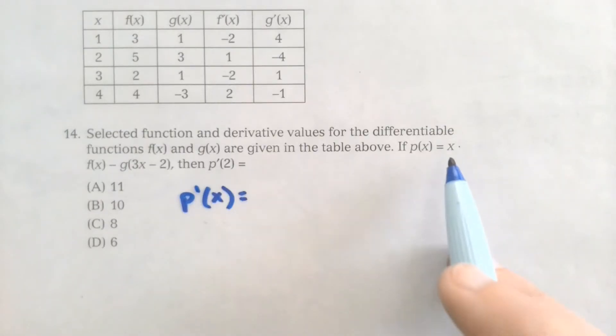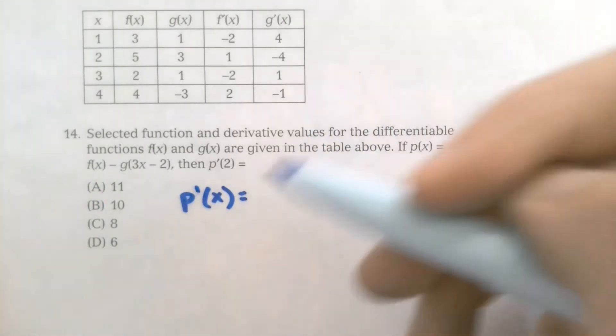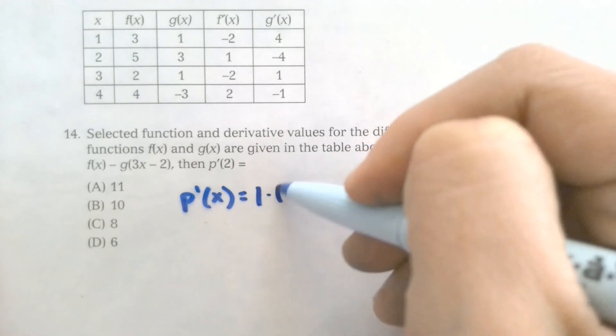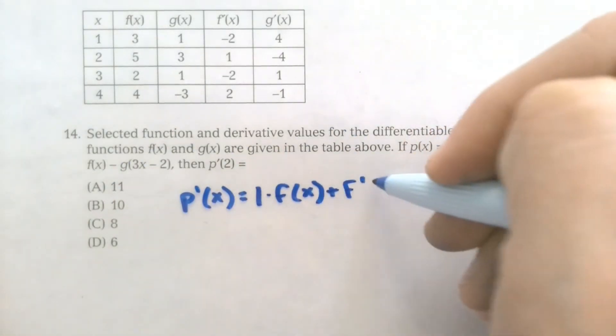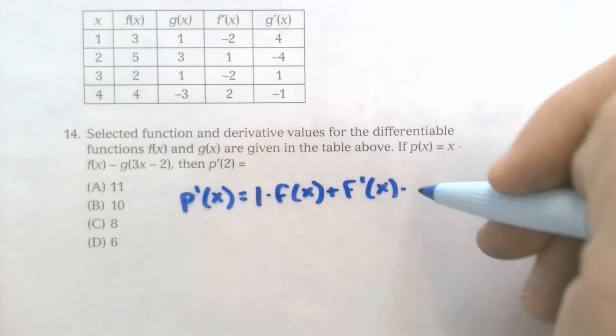So first, just finding p prime. I would need to recognize, like this x times f of x, I need to use the product rule because they're multiplying two different functions. So my derivative of x is 1 times f of x plus the derivative of f of x is f prime times x.